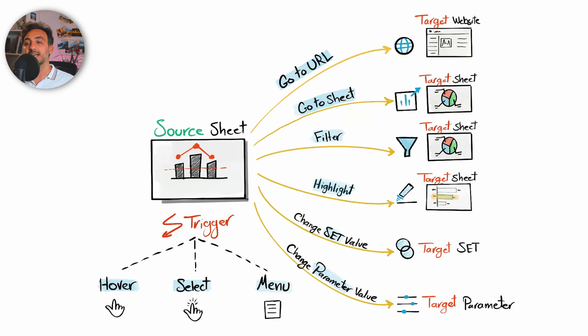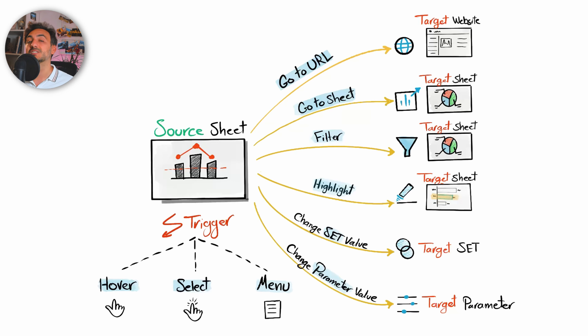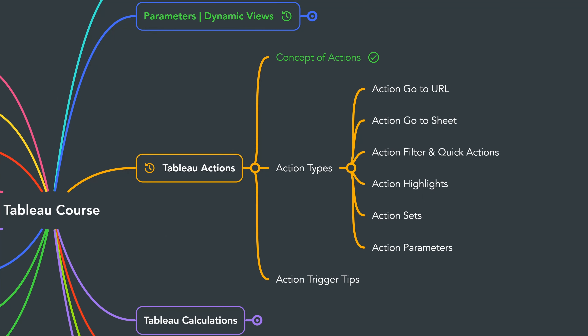With that, we now have all the options you can define as a consequence for an action. As you can see, it's straightforward: define the source sheet, define the trigger, then define what happens once the action is triggered. That was a quick introduction to Tableau actions, and next we're going to start with the first type of action — Go to URL.